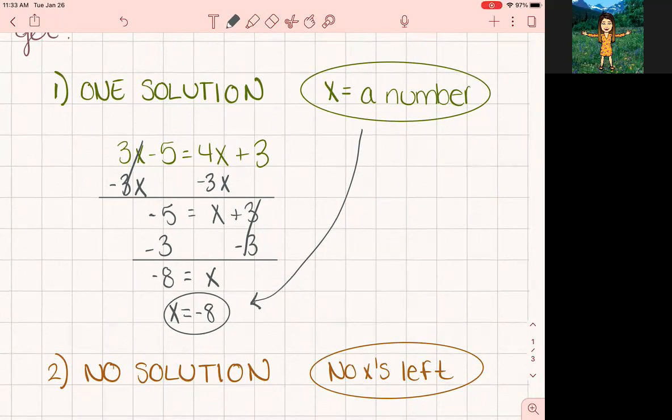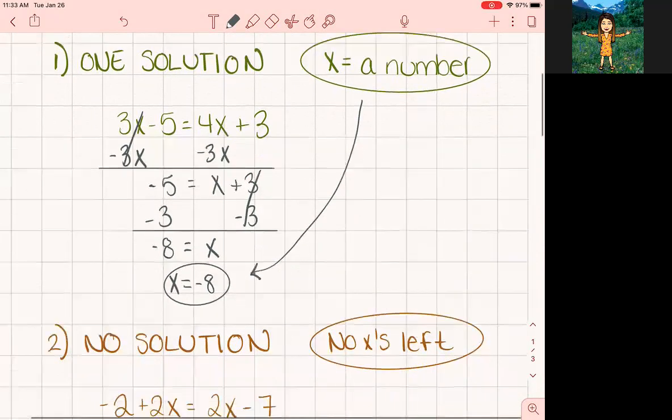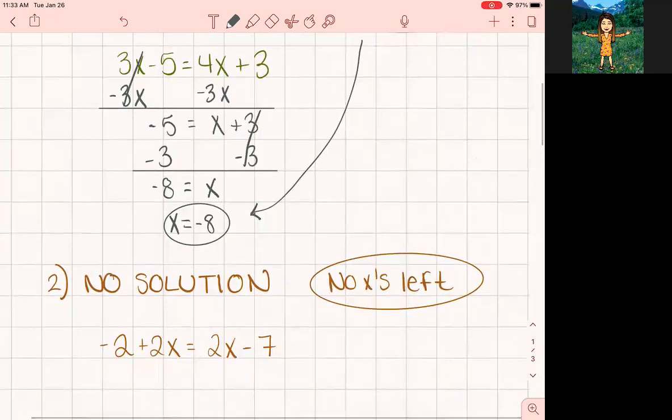what's going to happen is you're going to get to the end and you're not going to have any variables in the equation. You're just going to have numbers. So let's see what that looks like with this example problem. Go ahead and solve it and see what you get.